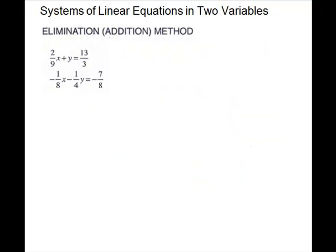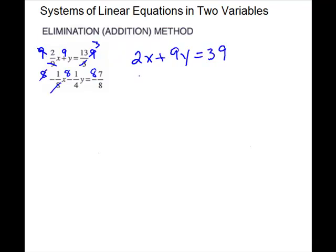The first thing I'm going to do on this next problem is get rid of the fractions. On equation number 1, I'm going to multiply through by 9 — 9 across every term. That will give me 2x plus 9y equals 39. For the second equation, I'm going to multiply through by 8 for each piece, so the 8's cancel, leaving negative x. Since 4 goes into 8 twice, that gives me minus 2y, and the 8's cancel to give minus 7.